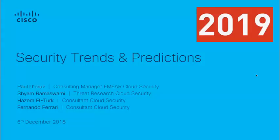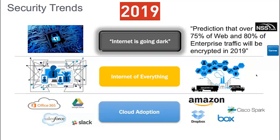Cisco publishes a cybersecurity report every year — you may already be aware of it — and we'll provide a link at the end of this session so you can download it. We've been doing this for a few years, looking at trends from an internet and enterprise service provider perspective, using that threat intelligence to provide guidance to customers. As we go into 2019, I'll be discussing what we're seeing beyond the security report published earlier this year.